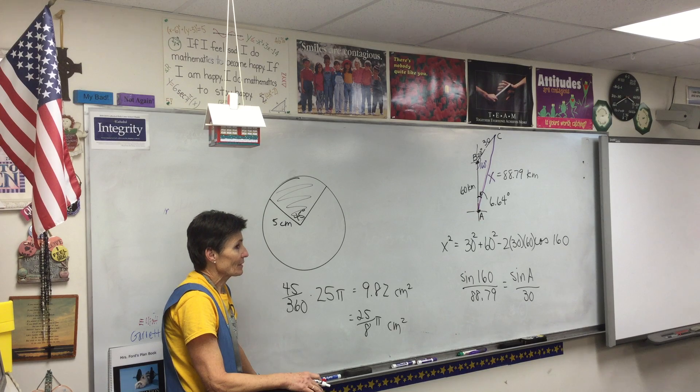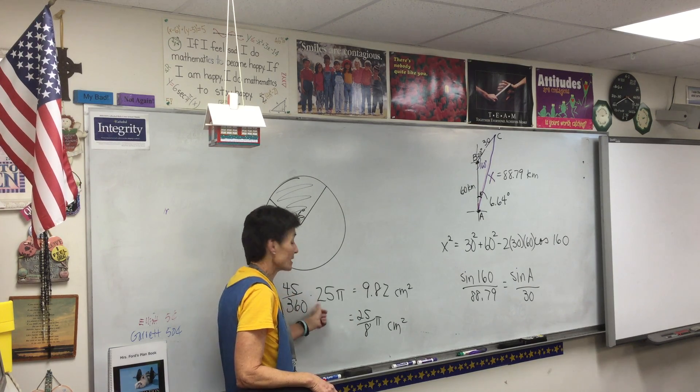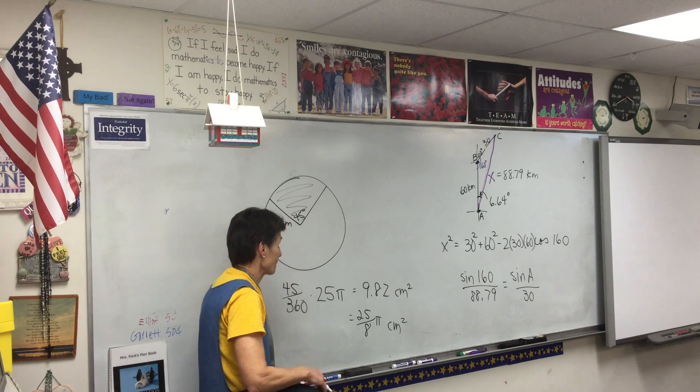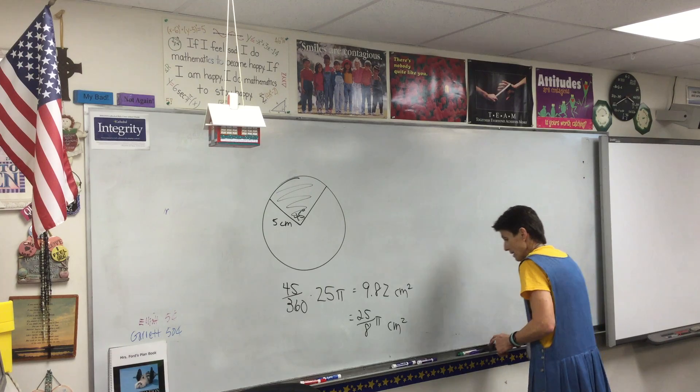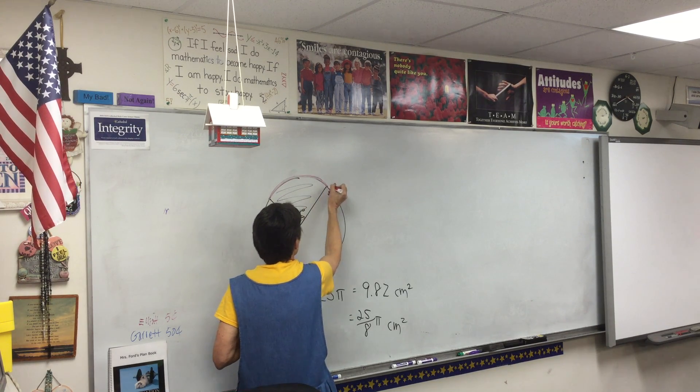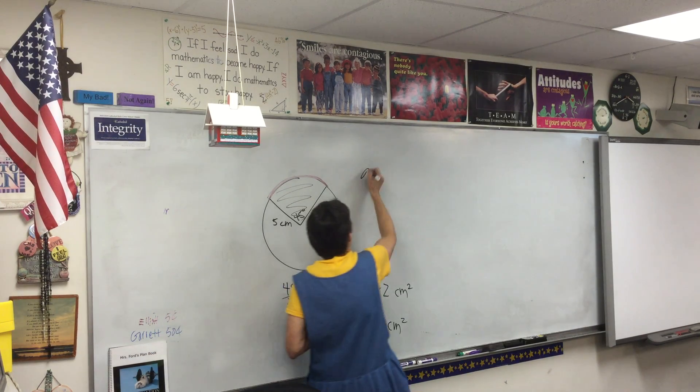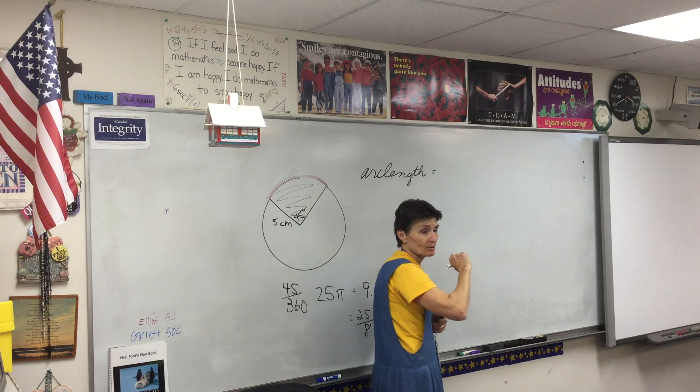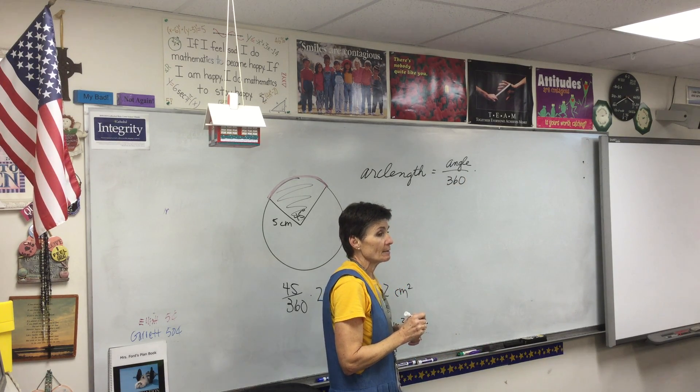Alright, while we're up here getting the finishing touches on that problem, let's see if you can do number four on your own. You've got a sector of a circle. Now guys, it's important to know the vocabulary. Sector means piece of pie. So here's my pie, there's my piece cut out of it. It has a radius of 5 centimeters and the central angle is 45°. And you are to find the area of the sector and the length of the arc. Now we haven't talked about that yet, but we will. Let's do the area of the sector first. You should know how to find that. So find the area of the sector and tell me what you get.